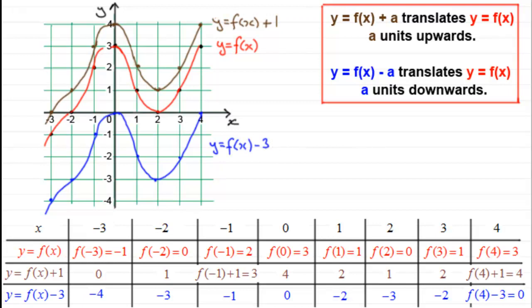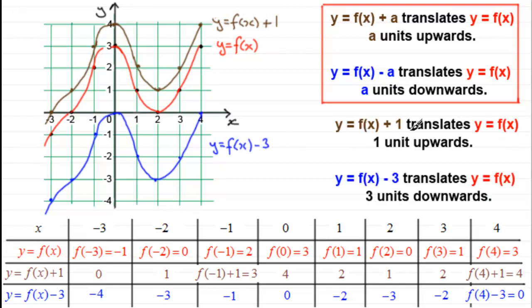So what we've got in summary then, for these two examples, is that y equals f of x plus 1 translates y equals f of x 1 unit upwards. And y equals f of x minus 3 translates y equals f of x 3 units downwards. So hopefully this has been able to give you an idea of how this particular notation works and why it works like this.